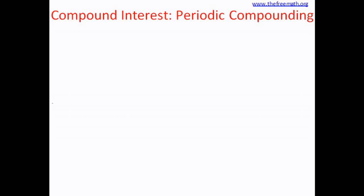Let's understand what it means by periodic compounding of compound interest. When you see any compound interest problem, typically the rate is mentioned as annual rate in percentage. Annual rate means yearly rate, or the rate per year, and 'in percent' means per hundred rupees, or for every hundred rupees.